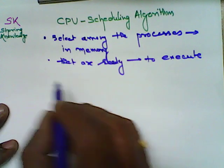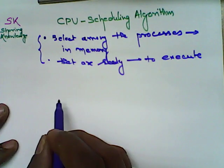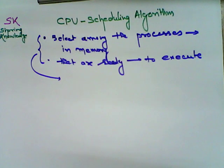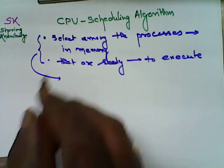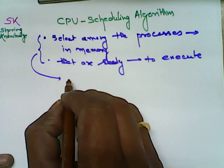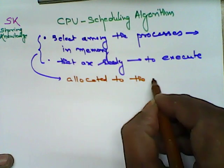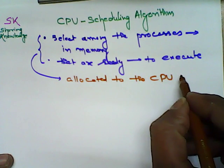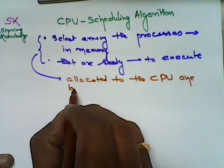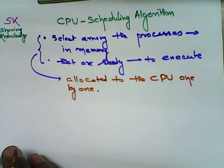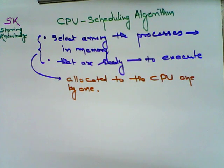When we say select a process in memory that is ready to execute, this function takes place in such a way that every process is allocated to the CPU one by one. CPU will not process every process at once if it is a single CPU. If there is more than one CPU, then it can handle multiple processes.